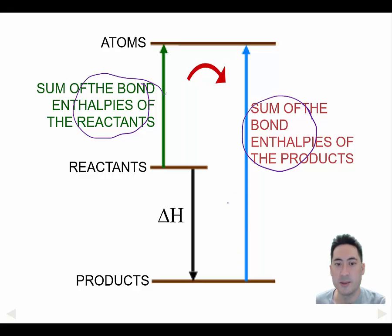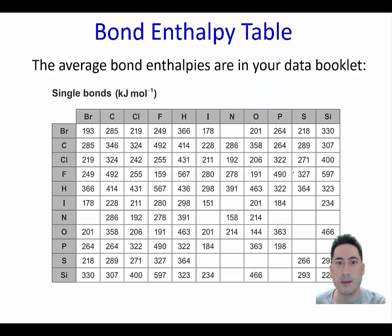This must have been a negative delta H. So that must have been an exothermic reaction, and the products created were much more stable, and there was energy released.